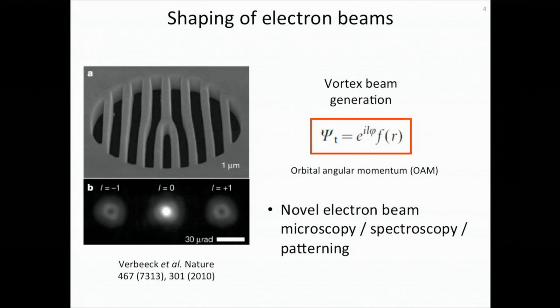Another application of the nanograting is shaping of electron beams. In this figure, we see a nanograting with a fork defect, and there are some interesting properties carried by the diffracted beam when an incoming beam is going through this structure. This is called vortex beam generation, and we can see the electron wave function shows that the diffracted beams are carrying a non-zero orbital angular momentum. So this structure can be used to generate OAM in electron beams. Nanogratings can be used in shaping of electron beams, hence enable novel electron microscopy, spectroscopy, and patterning techniques.